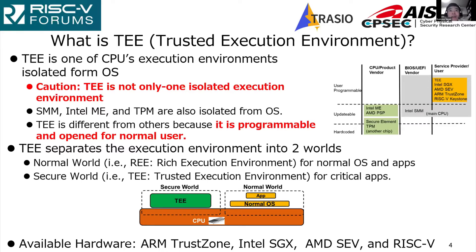TEE separates the execution environment into two worlds: normal world for normal OS and normal applications, and secure world for critical applications. They are also named REE and TEE. Popular CPUs have TEE — for example, Intel SGX and TrustZone. RISC-V also has TEE.